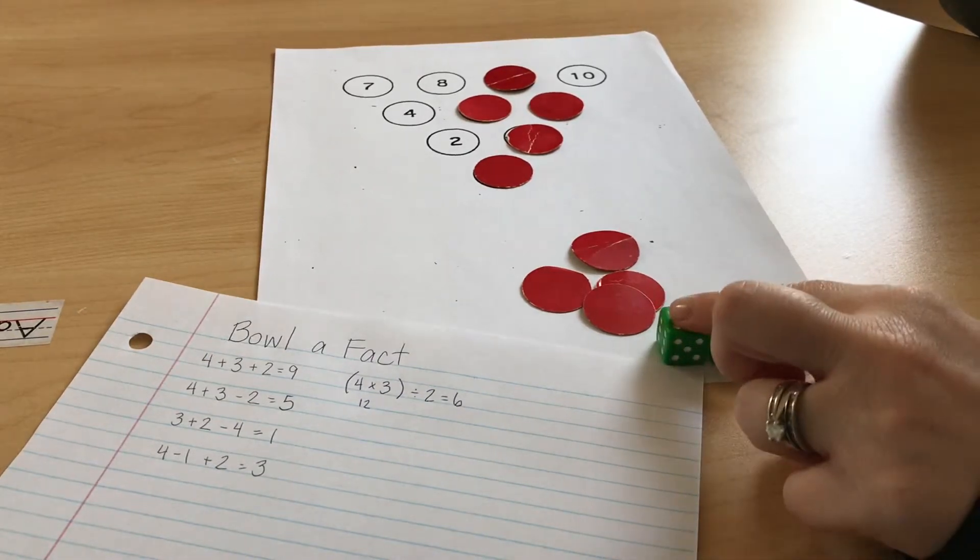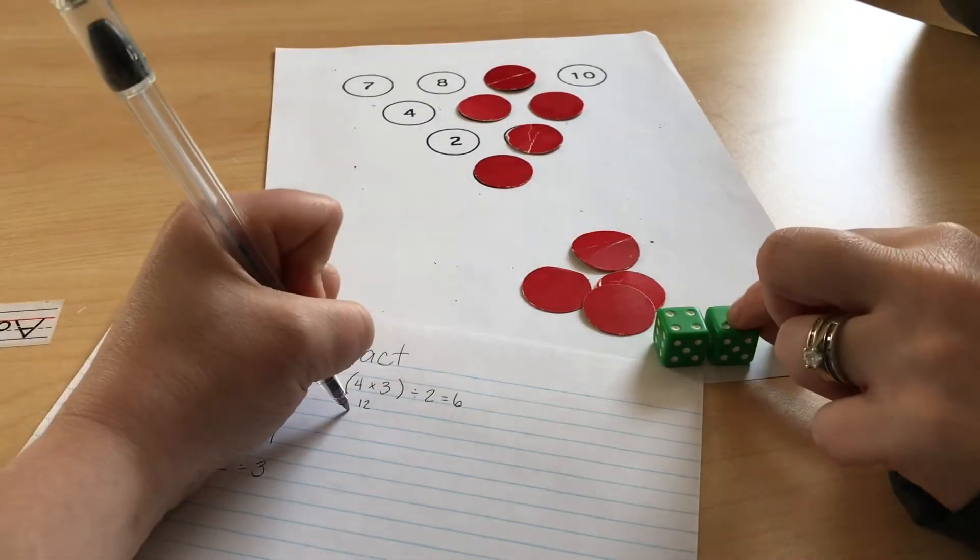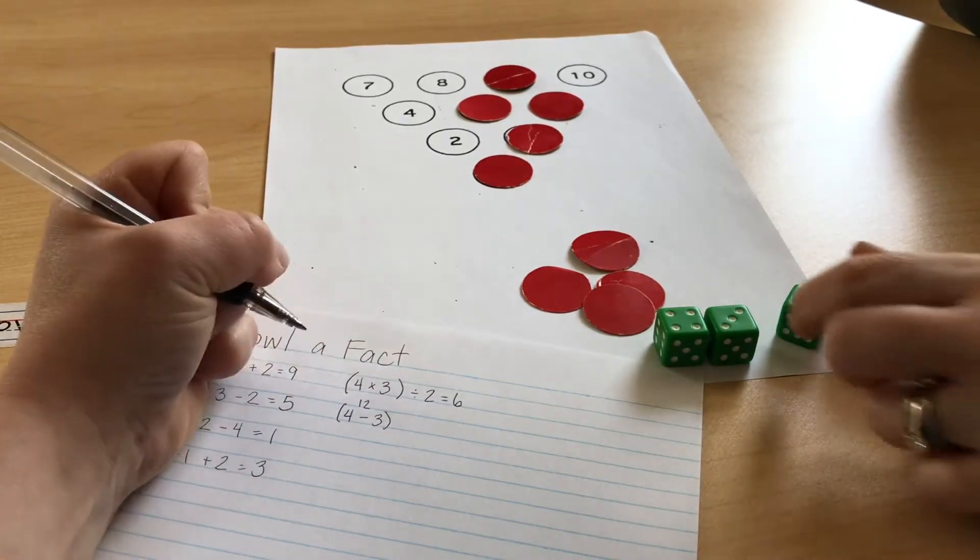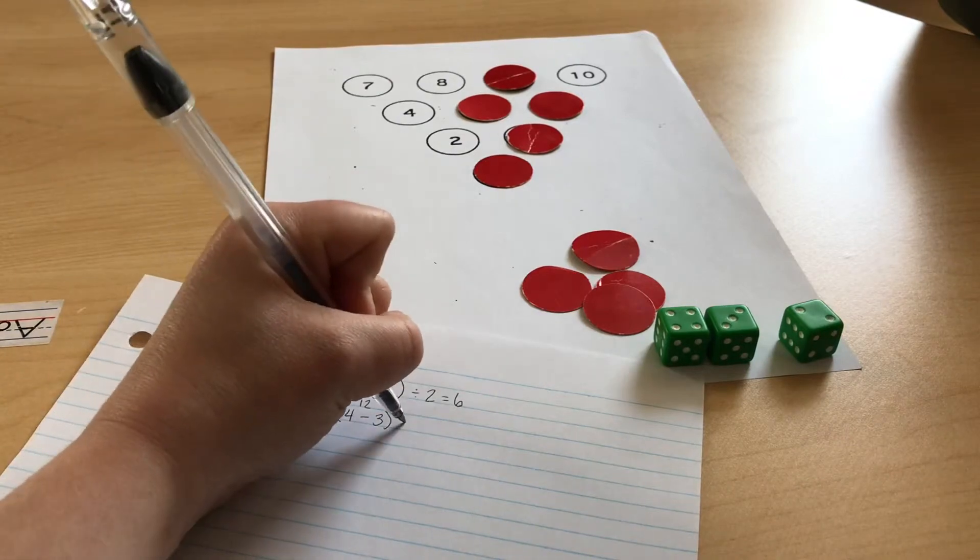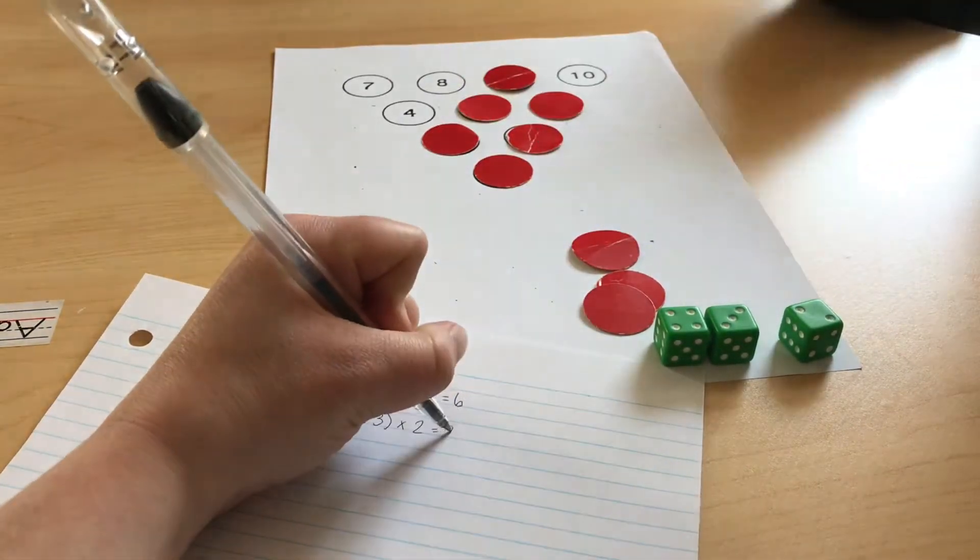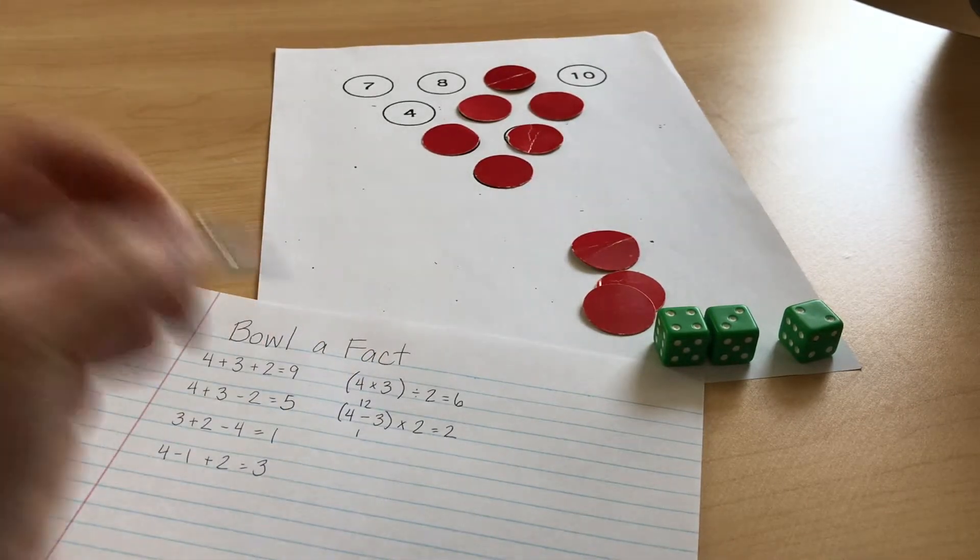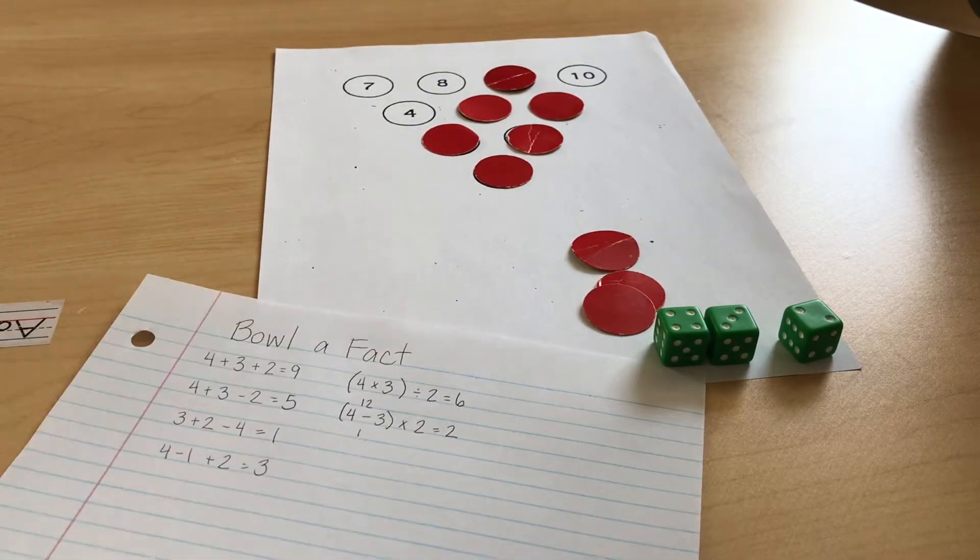Now if we had four take away three, that's one. And one times two equals two. So four take away three gives me one, and then one times two is two.